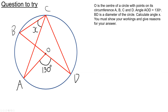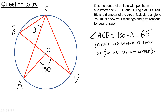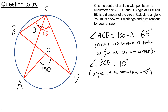Here is the answer. Angle ACD is equal to 65 degrees, because the angle at the center is 130, so the angle at the circumference is 65. We also know that BD is a diameter, so the whole angle BCD is going to be a right angle. To find X, I do 90 take away 65, which gives X equals 25 degrees.